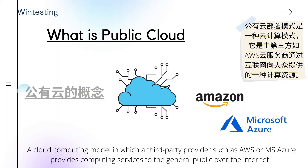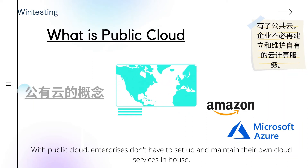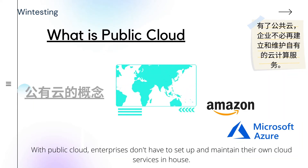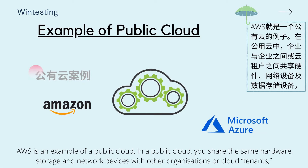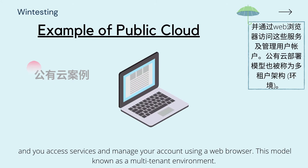What is public cloud? A cloud computing model in which a third-party provider, such as Amazon Web Services (AWS) or Microsoft Azure, provides computing services to the general public over the internet. With public cloud, enterprises don't have to set up and maintain their own cloud services in-house. AWS is an example of public cloud. In a public cloud, you share the same hardware, storage, and network devices with other organizations or cloud tenants, and you access services and manage your account using a web browser. This model is known as a multi-tenant environment.